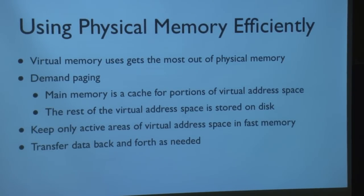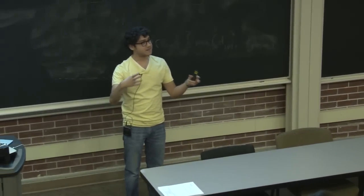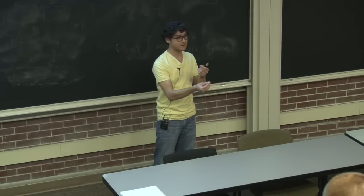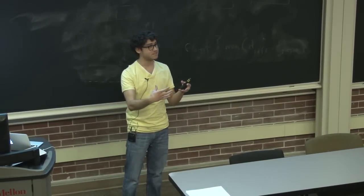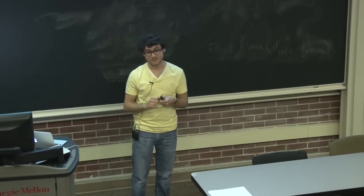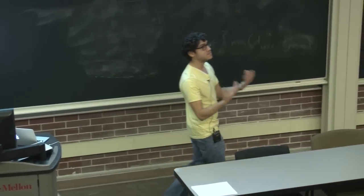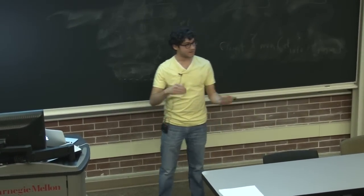Let's start with using physical memory efficiently. If we provide some abstraction for how we deal with physical memory, we can get the most out of it. One technique is called demand paging — we have some amount of physical memory used to store data that might sometimes reside on disk and sometimes be accessed from main memory. We use the small amount of memory we have efficiently by moving data in and out of it, storing unused data on disk and fetching it when needed.